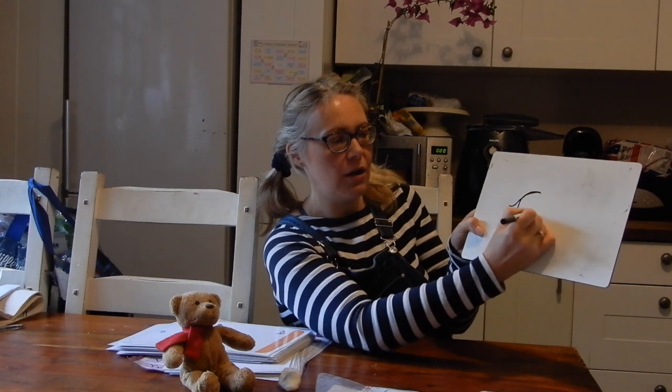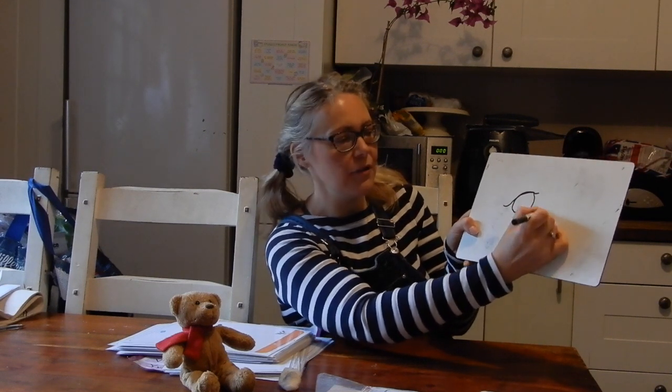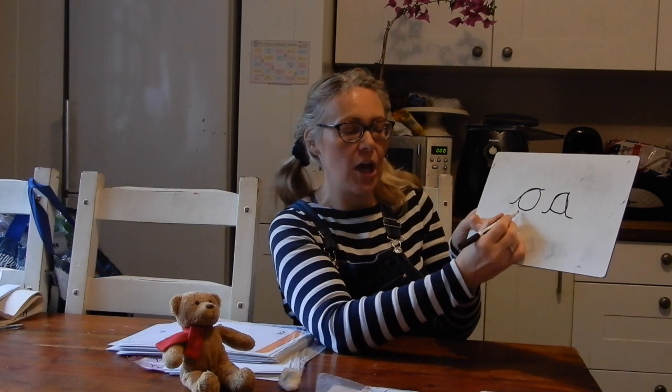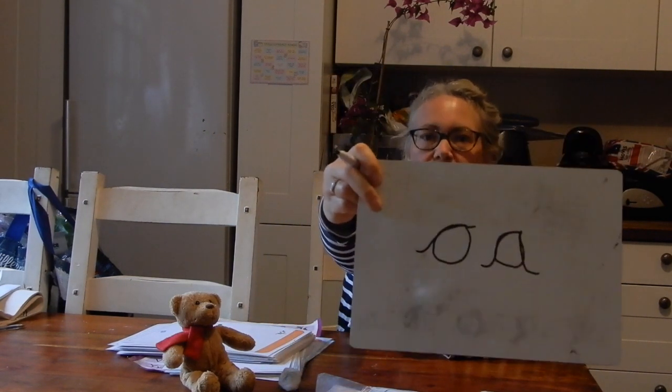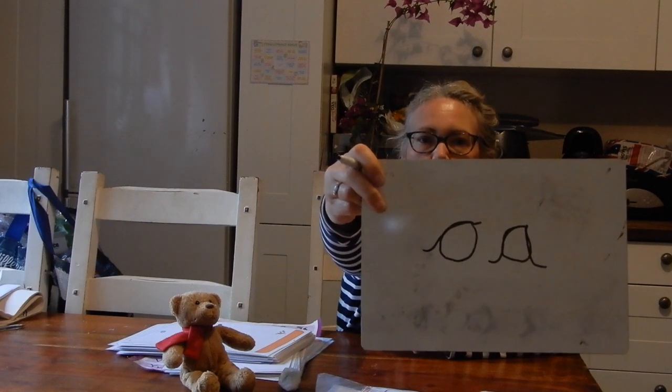Now let's revisit the oa sound - how do we make the oa digraph? Two letters making that o sound. Write it on your board. What's the second letter? It is the o first, followed by the letter a. So that is the oa sound. If you've got it right, pat on the back.